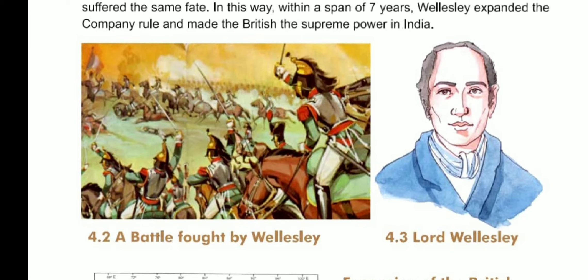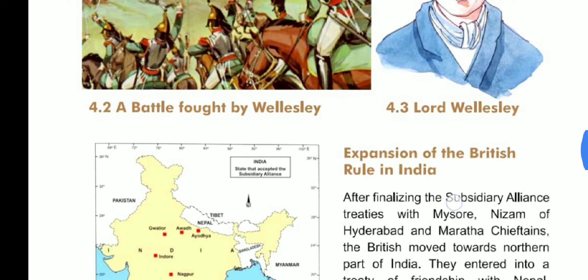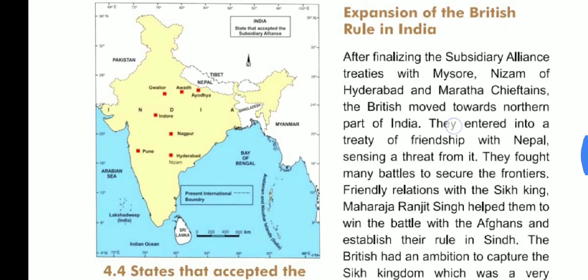You can see here a battle fought by Lord Wellesley. Moving forward, after finalizing Subsidiary Alliance treaties with Mysore, the Nizam of Hyderabad, and Maratha chieftains, the British moved towards the northern part of India. They entered into a treaty of friendship with Nepal, sensing a threat from it, and fought many battles to secure their frontiers.